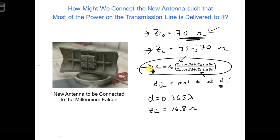Is there now a way we can transform our 16.8 ohms? So let's draw this out. This is ZL, and now we're at a distance of 0.365 lambda. And at this location, ZN is equal to 16.8 ohms.